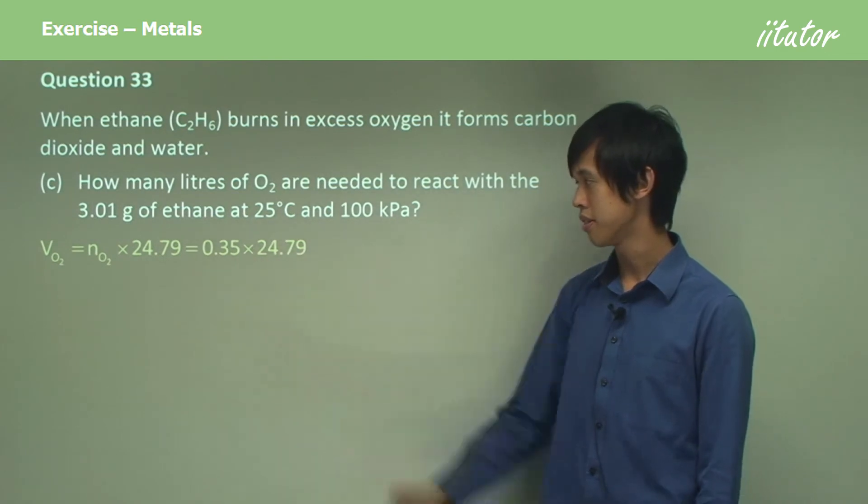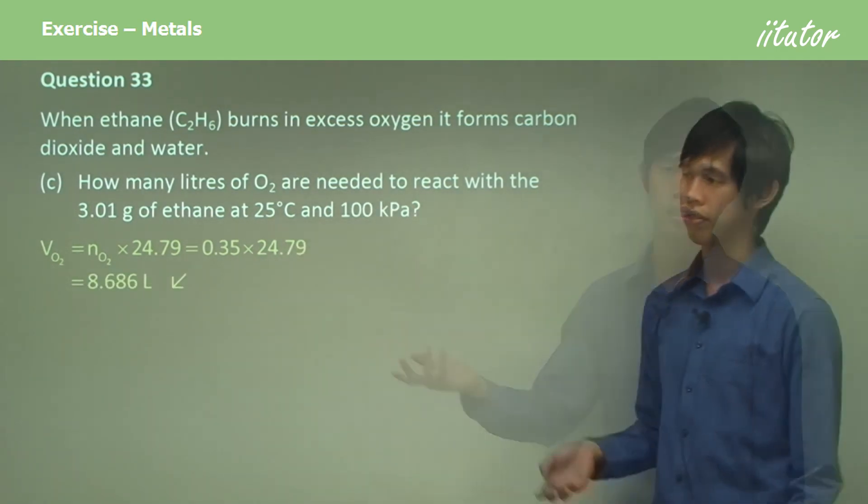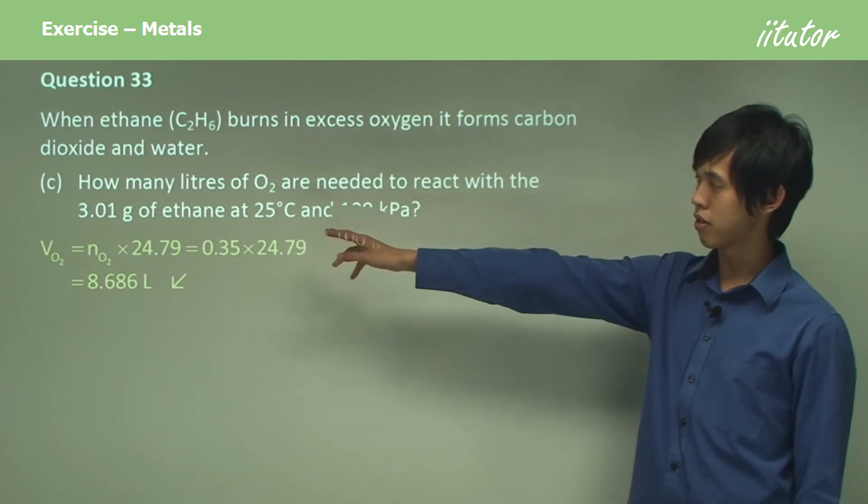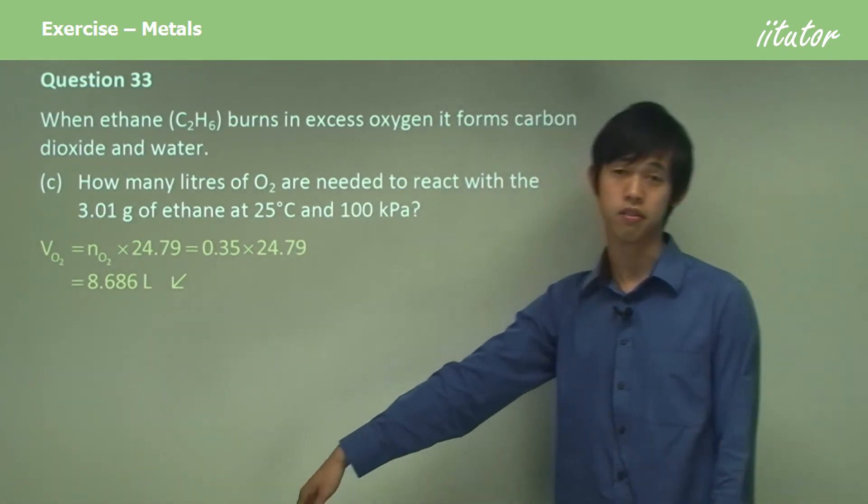So there's our number of moles. So it's 8.686 liters. For every 3.01 grams of ethane, we need 8.686 liters of oxygen.